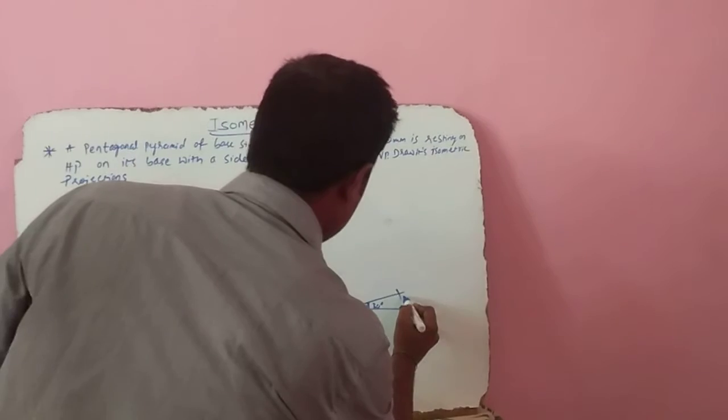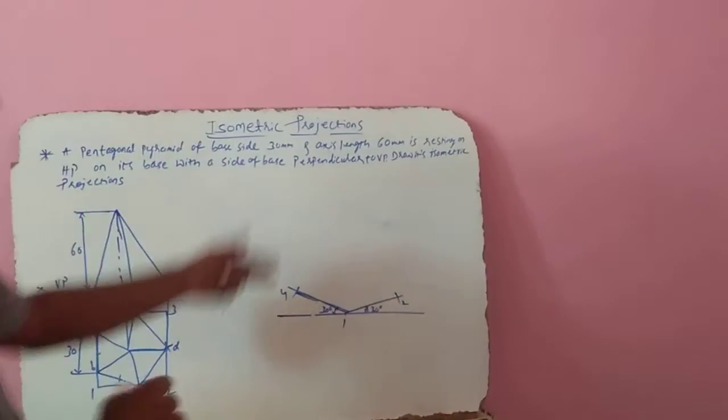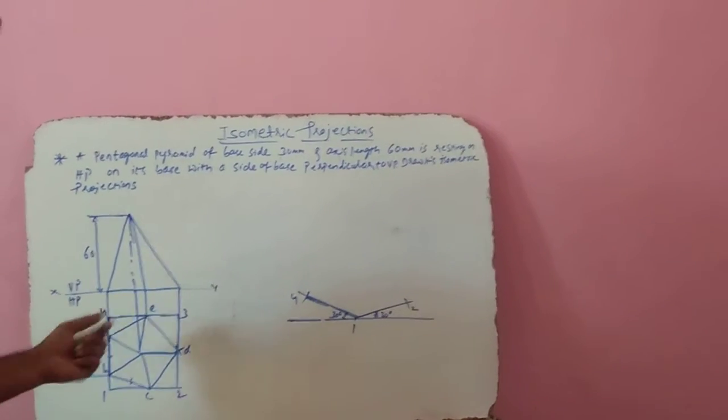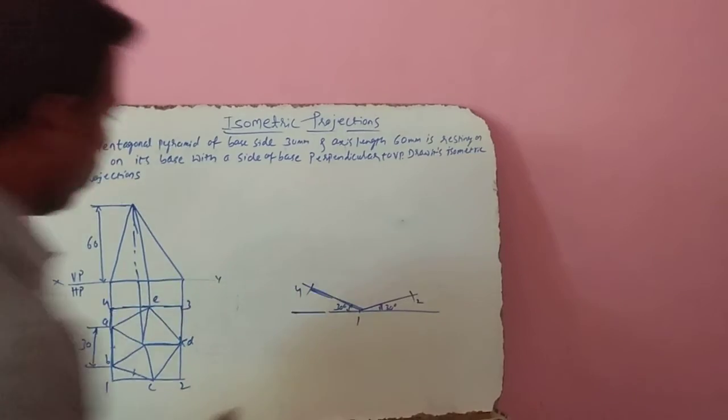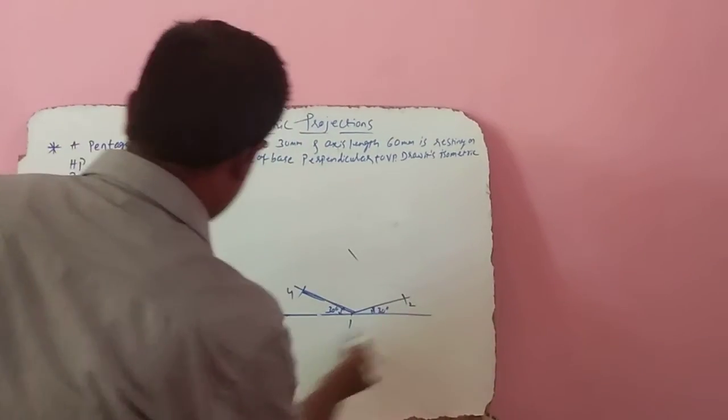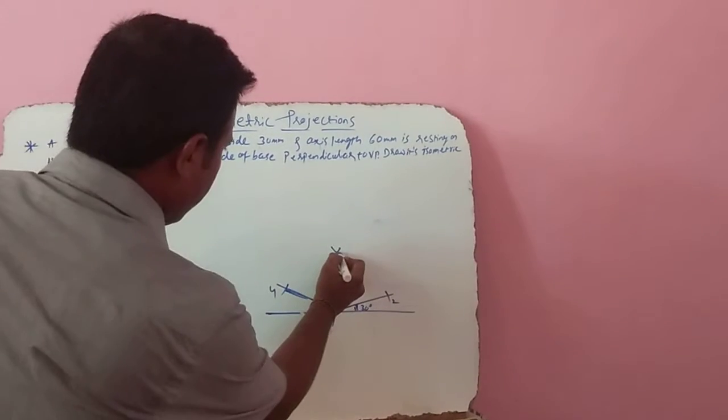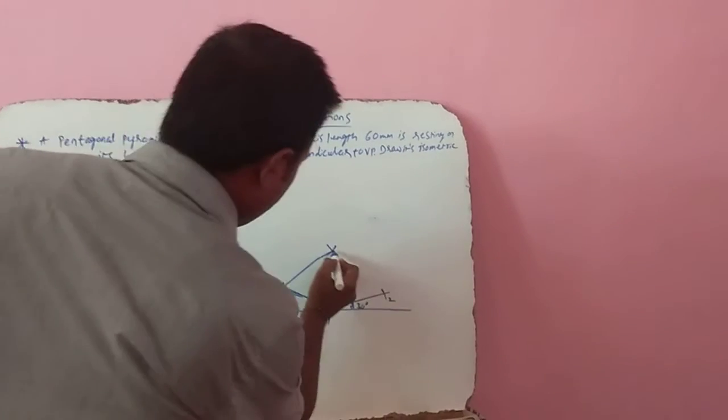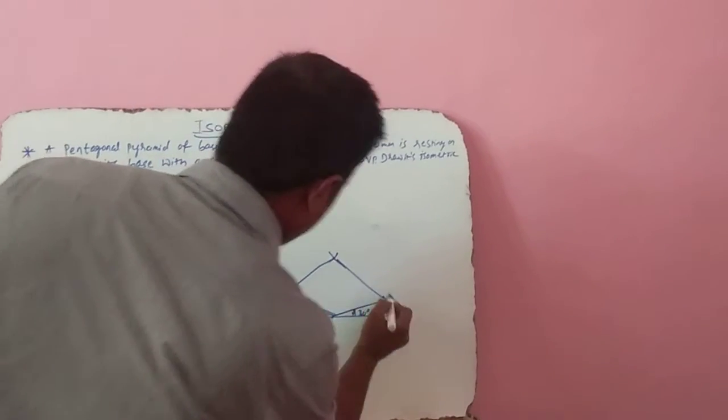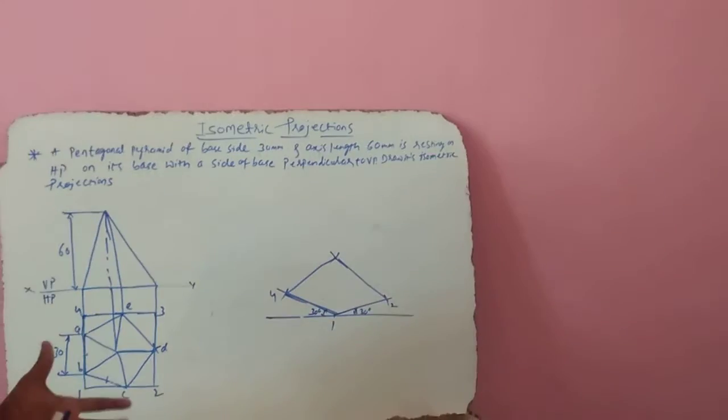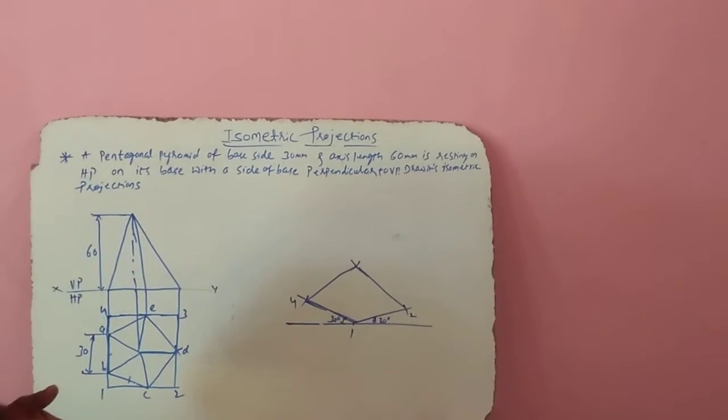Now you got 1, 2 and 4. Similarly, we have to get the corner 3 here. Measure 4 to 3 and draw it. Again, measure 2 to 3 and complete this one. This forms the box of the pentagon.